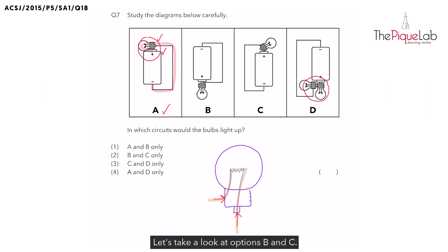Let's take a look at options B and C. Check those two points. What is the issue with option B? Yes, the metal casing is not connected to the circuit. What about option C? Yes, the metal tip is not connected to the circuit.